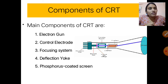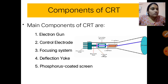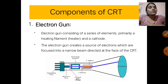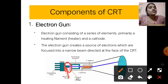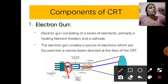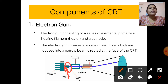The main components of CRT are: electron gun, control electrode, focusing system, deflection yoke, and phosphorus-coated screen. The electron gun consists of a series of elements, primarily a heating filament and a cathode. It creates a source of electrons which are focused into a narrow beam directed towards the face of the CRT.